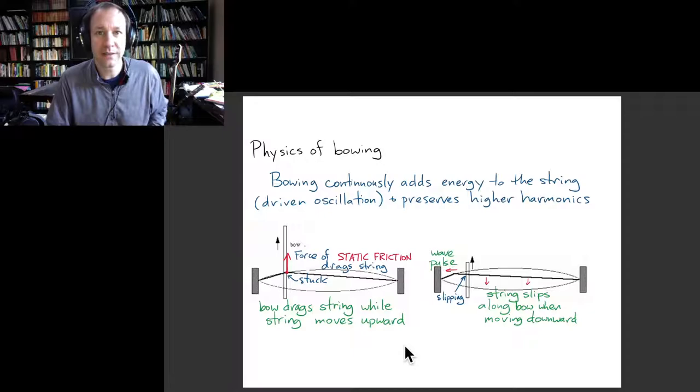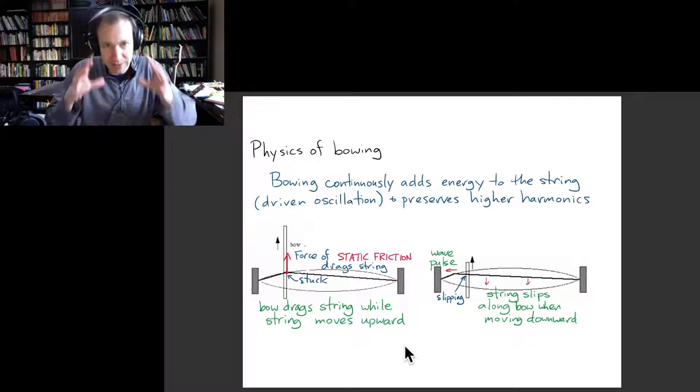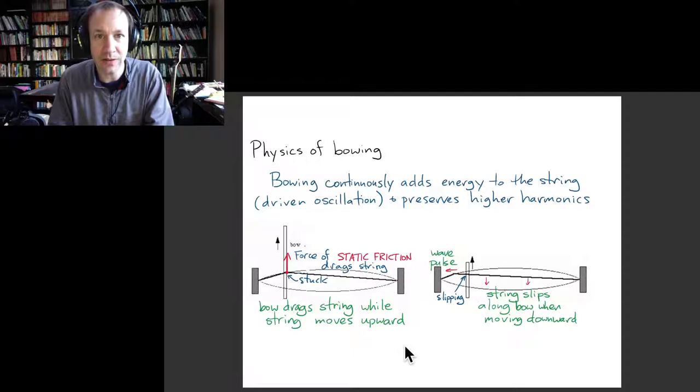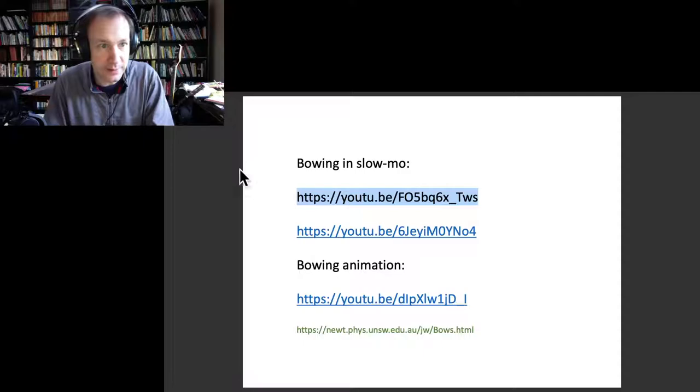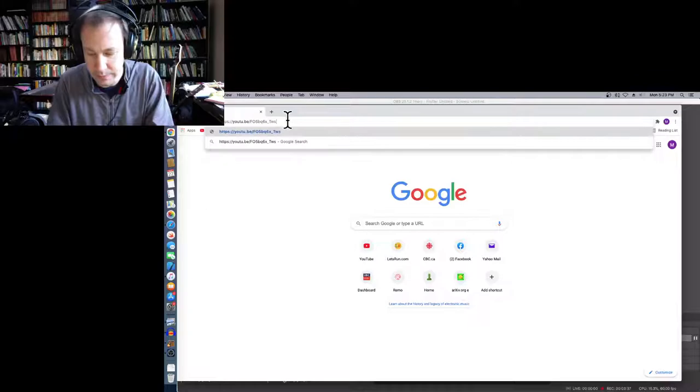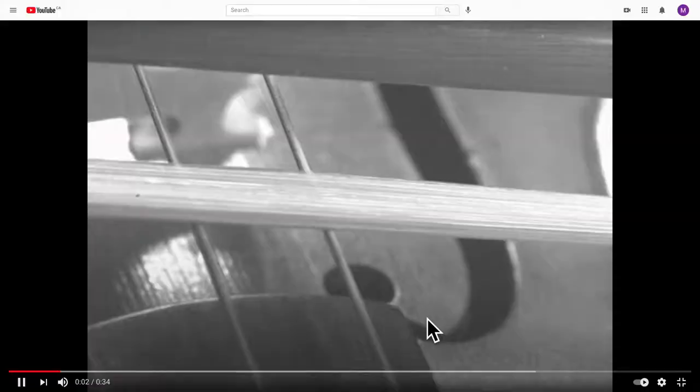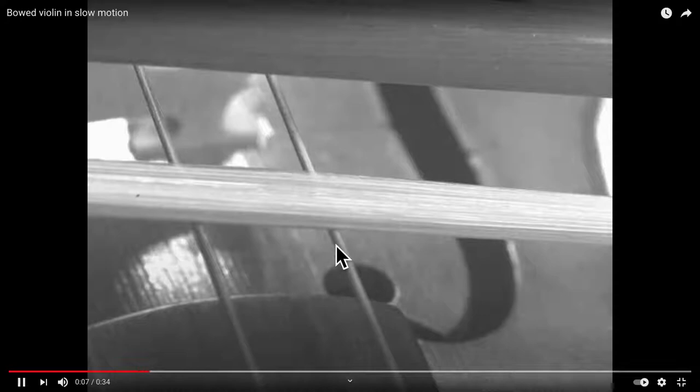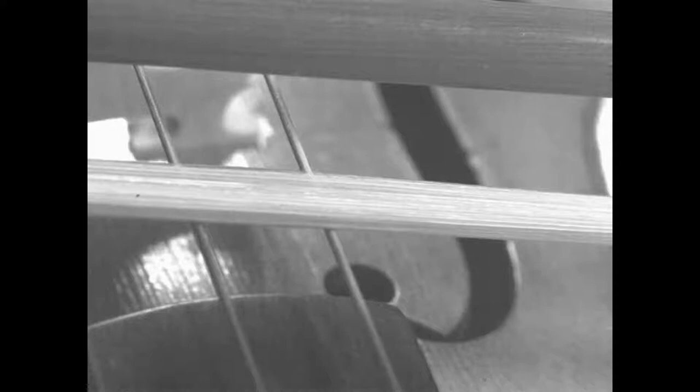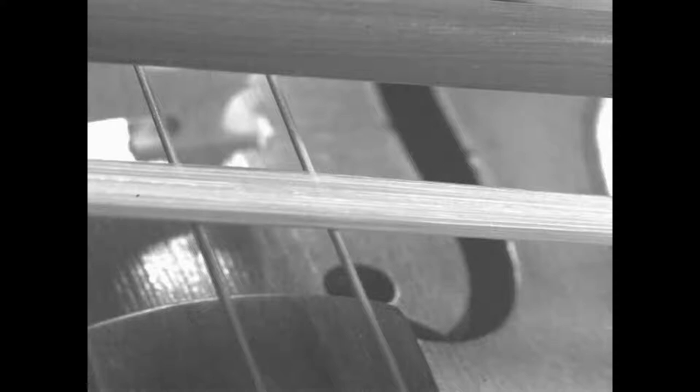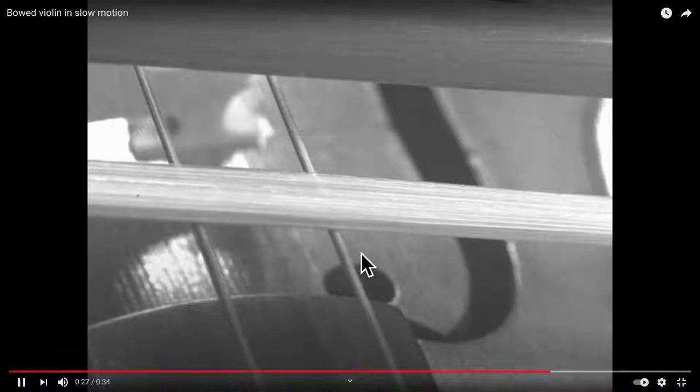And so I found a few great videos that really allow us to visualize this because someone actually took a super slow-mo camera and zoomed in on a bow that's being dragged across a string. So let's have a look here. This is the first video. So here it's dragging the string and it slips and it drags the string and it slips and it drags the string and it slips. And so this is the same period, this is way slowed down so this is the period of the oscillation of that string. It's just that everything is slowed down a lot so that we can see the sticking and slipping.